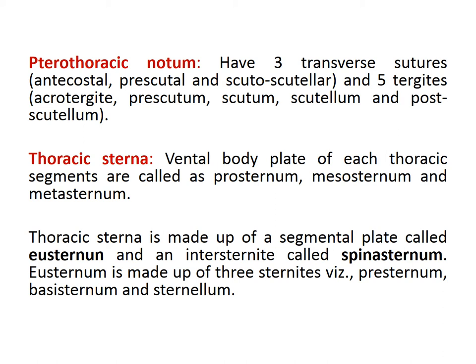The thoracic sternum is made up of a segmented plate called eusternum and an intersternite called spinasternite. The eusternum is made up of pre-sternite, pre-sternum, basisternum and sternellum.